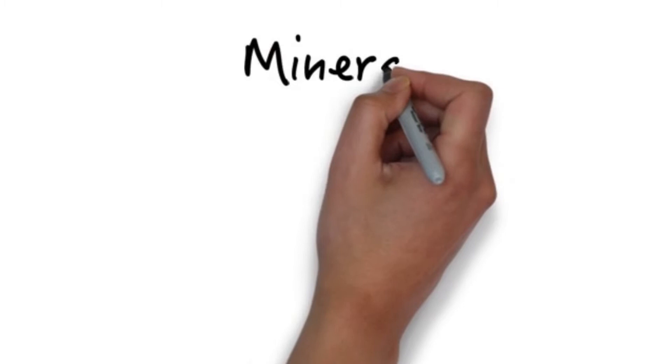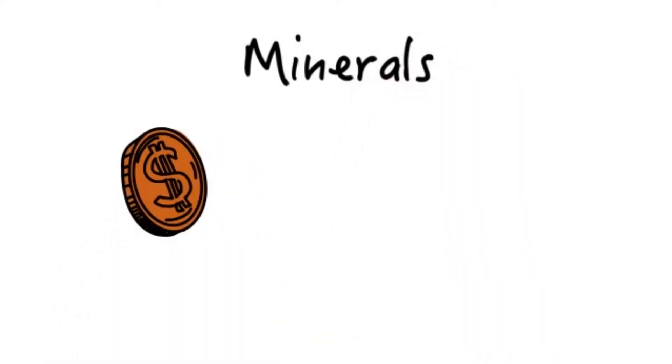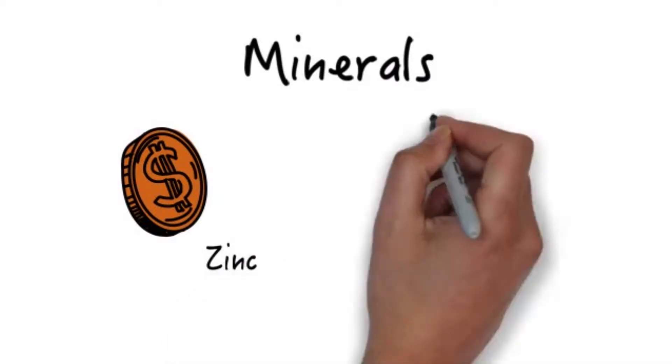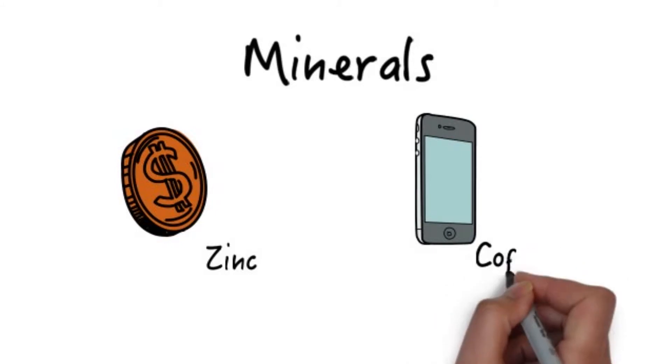Almost everything we use is made from minerals or contains minerals in some form. For example, a coin is mostly made from minerals, and even all of our electronic devices use minerals for cables, circuit boards, and other electronic components.